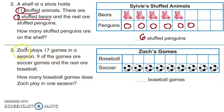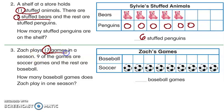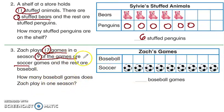Now let's try number three — go ahead and pause the video and do it on your own. Let's read it together: Zach plays 17 games in a season. Nine of the games are soccer games and the rest are baseball. How many baseball games does Zach play in one season? I'm going to do the same thing — I have nine soccer games here.